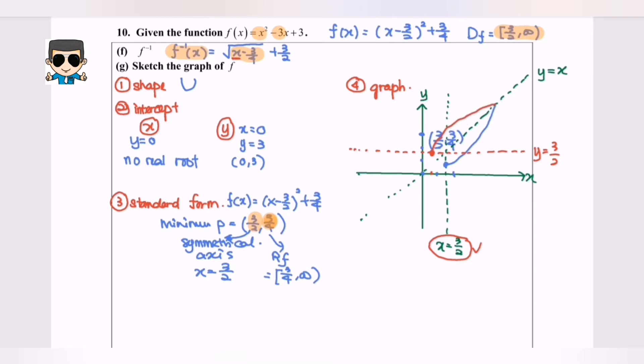So that is the graph for F inverse, and the blue color one will be the F. Based on the diagram, we can see that the domain for F actually equals 3 over 2 until positive infinity, and the range for F, you have to refer to the Y axis, which is 3 over 4 until positive infinity.